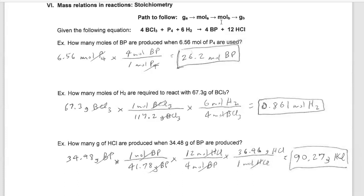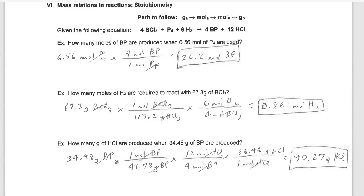Ironically, the roadmap doesn't tell me how to get there — it just tells me where I need to go next. But sometimes just knowing where to go next is half the battle. We write down 6.56 moles of P4 and make a factor. Do I know a direct relationship between moles of P4 and moles of BP? Remember we talked about balanced equations being molecule-to-molecule ratios, but they're also mole-to-mole ratios. So when you need to know moles of this to moles of that, look at your coefficients in your balanced equation.